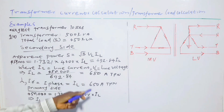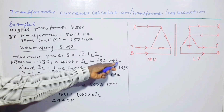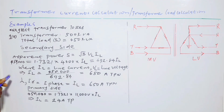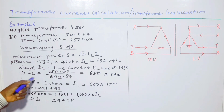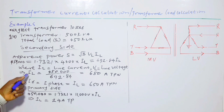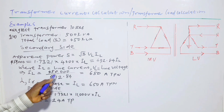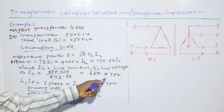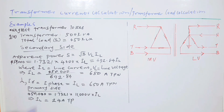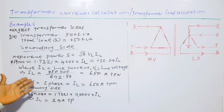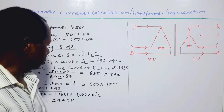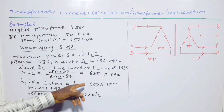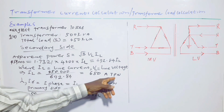From that formula, 450,000 = √3 × 400 × I_L, giving I_L = 650 amperes. So the line current, which equals the phase current, is 650 A, three-phase with neutral.